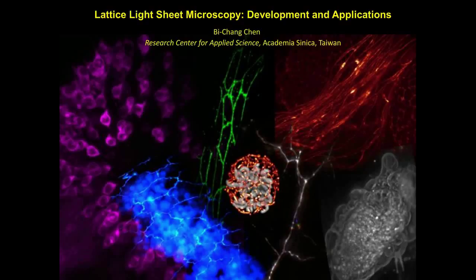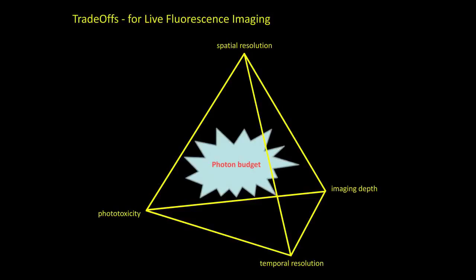Thanks for the introduction. I'm pleased to present the research I have done in Dr. Eric Betzig's group on lattice light sheet microscopy, focusing on how we developed the technique and its applications. Lattice light sheet microscopy is designed for 3D live fluorescence imaging. There are always trade-offs for live fluorescence imaging, especially regarding spatial resolution, imaging depth, temporal resolution, and phototoxicity, which is a critical concern in all live experiments.